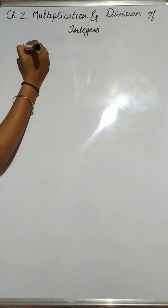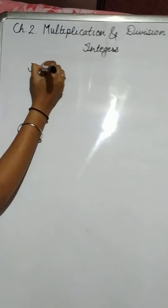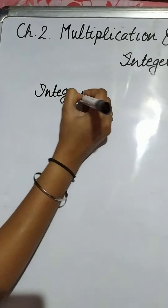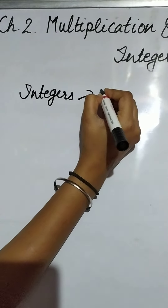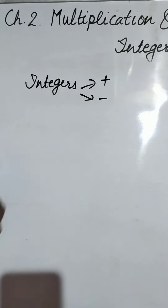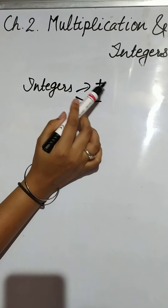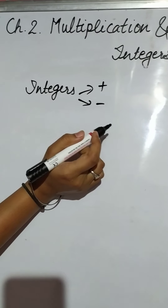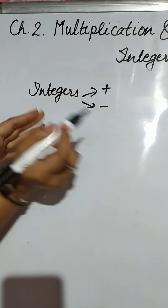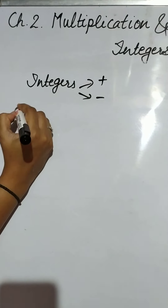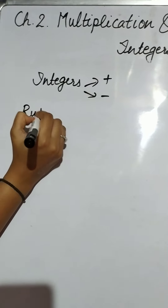So what are integers? Integers means positive and negative numbers. For performing addition, subtraction, multiplication, and division of integers, we will have to learn some rules.